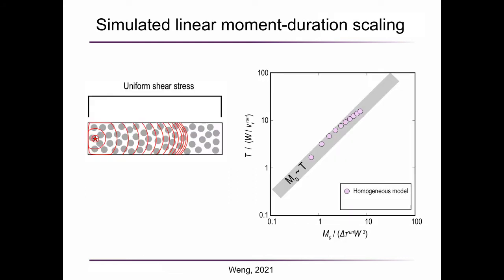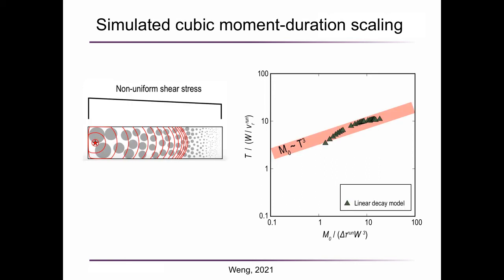Here I provide an explanation of why the moment duration scaling may depend on different data sets by a simple rupture model. On the left, it shows a uniform shear stress model. As the shear stress increases, both moment and duration increases, but follows a linear scaling relation as the right figure shows. But if the shear stress is heterogeneous, as a simple linear decaying model, the simulation result shows that a simple heterogeneity can produce a cubic scaling.